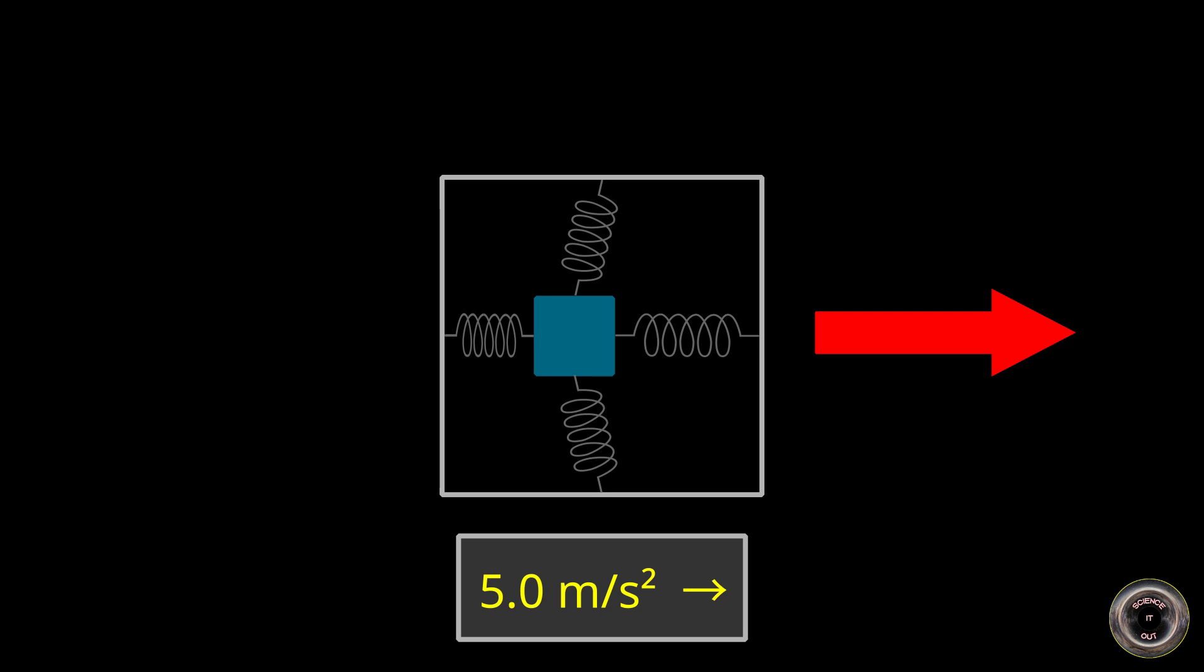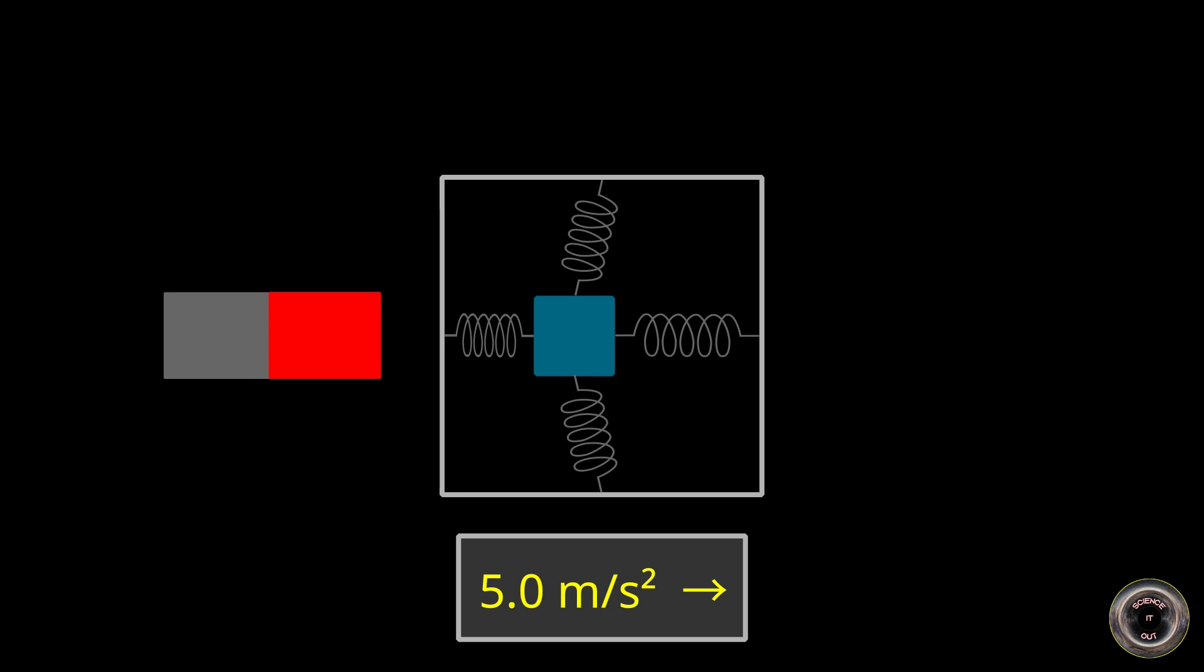But there is a flaw here. This principle of operation assumes that there are no forces other than inertial forces acting on the weight. But for example, if the weight was magnetic and we put a magnet close to the accelerometer, the weight would get deflected and the accelerometer would be led to believe that it was accelerating.